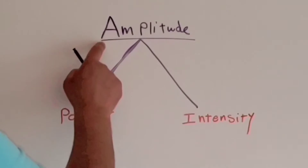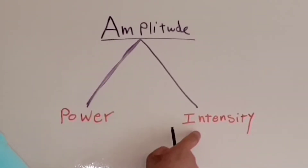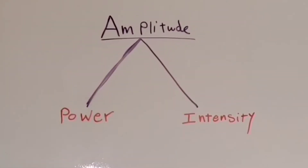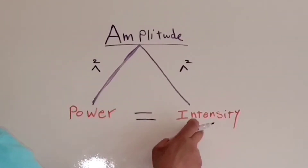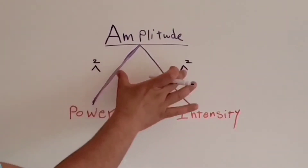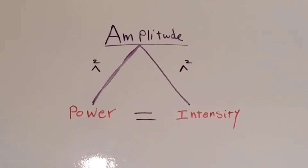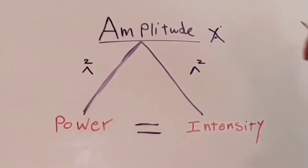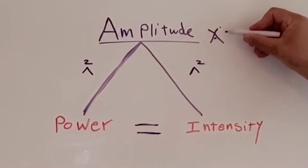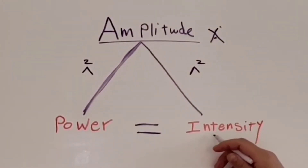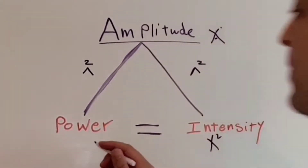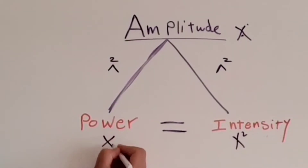That means when one increases, the other two increase, and when one decreases, the other two decrease. Power and intensity are proportionally related to the amplitude squared, and proportionally related equally to each other. That means if the amplitude increases by a factor of X, the intensity will increase by a factor of X squared and the power will increase by a factor of X squared.